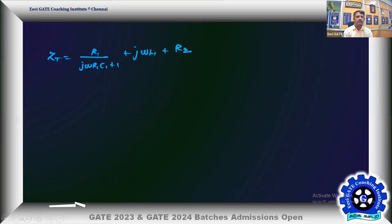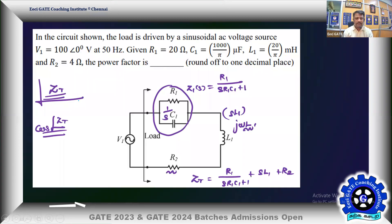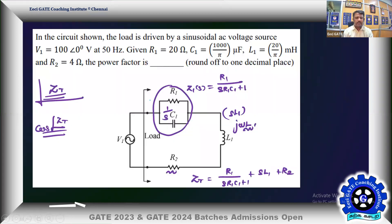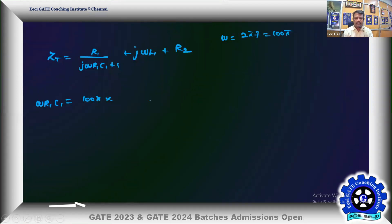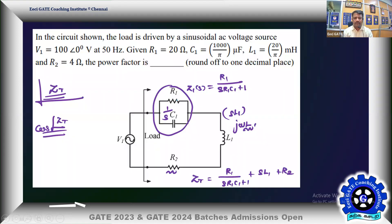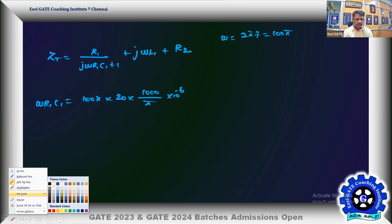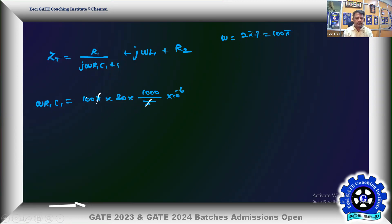Let me calculate ω·R1·C1. Frequency f = 50 Hz, so ω = 2πf = 100π rad/s. Then ω·R1·C1 = 100π × 20 × (1000/π) × 10⁻⁶. Pi cancels, and simplifying: ω·R1·C1 = 2.